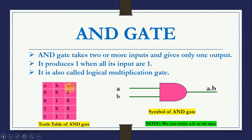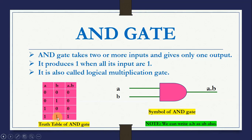It produces 1 when all its inputs are 1. When both inputs are 0, it produces 0. When A is 0 and B is 1, it produces 0. When A is 1 and B is 0, it produces 0 because one of the inputs is still 0. When both inputs are 1, the output will be 1.